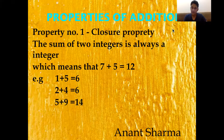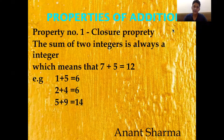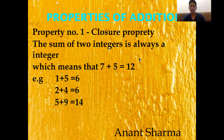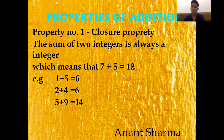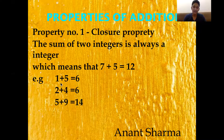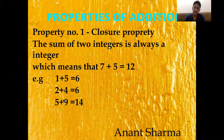The first property is the Closure Property. This property says that the sum of two integers is always an integer. For example, 7 plus 5 equals 12 — all three are integers. Similarly, 1 plus 5 equals 6, 2 plus 4 equals 6, and 5 plus 9 equals 14.